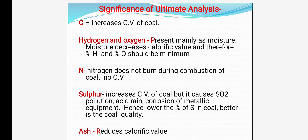What about the importance of hydrogen and oxygen? Hydrogen and oxygen are present in the form of moisture — that is, H2O vapor. Moisture decreases the calorific value because it decreases thermal efficiency and increases the ignition point. So, lesser the percentage of hydrogen and oxygen, better is the quality of coal. Less percentage means better quality of coal.